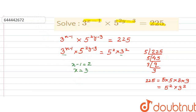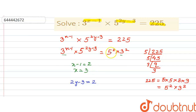Comparing powers of base 5: 2y minus 3 equals 2, because the power of 5 on the left is (2y minus 3) and on the right it is 2. So 2y equals 5.